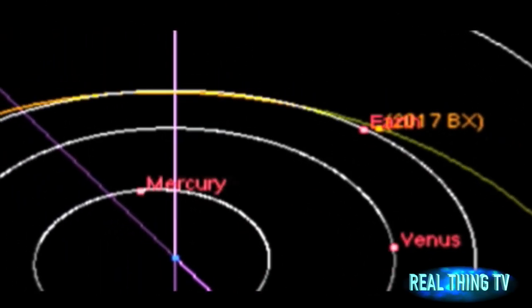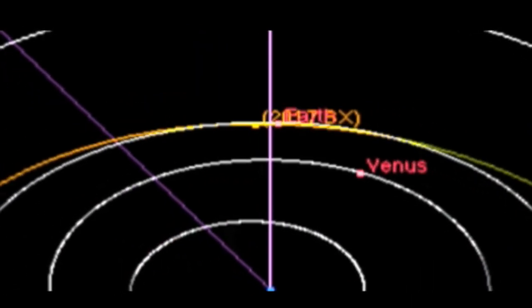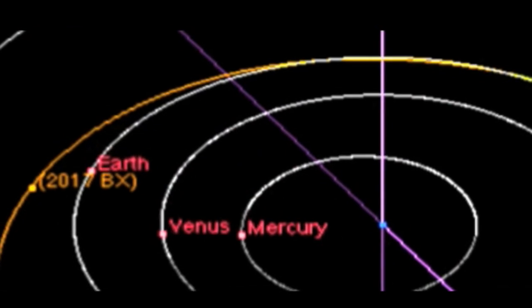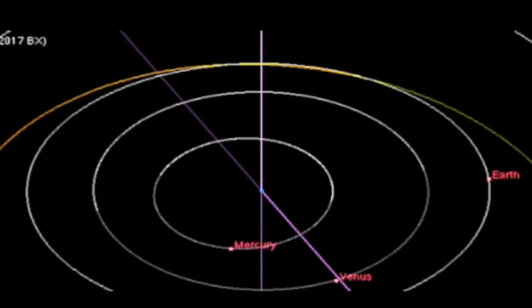At the time of its closest approach, the asteroid will be only 162,252 miles away, 30% closer than the Moon.